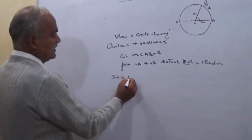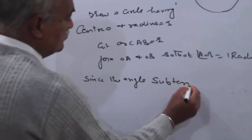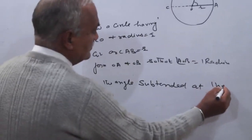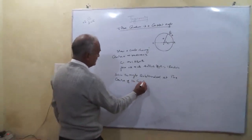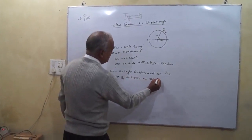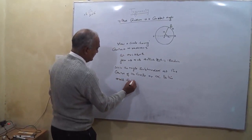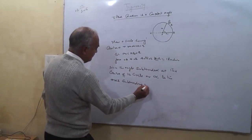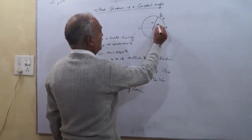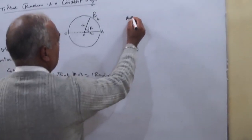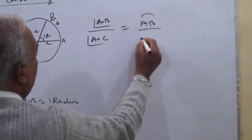Since the angles subtended at the center of the circle are proportional to the arcs subtending them, we write: angle AOB upon angle AOC is equal to arc AB upon arc ABC.